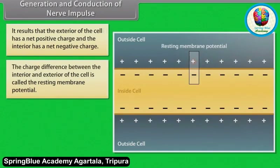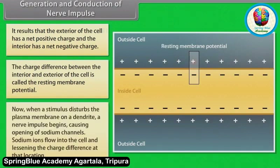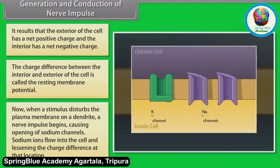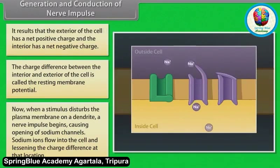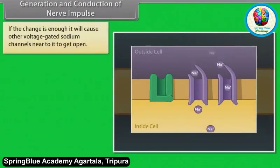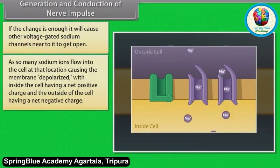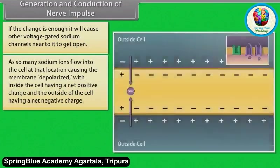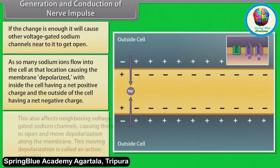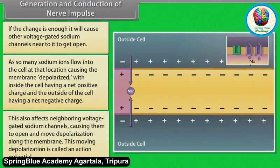The pumps send sodium ions out of the cell and bring potassium ions into the cell, while other channels allow some potassium ions to flow back out. Sodium ions cannot easily get back in to replace the lost positive charges. As a result, the exterior of the cell has a net positive charge and the interior has a net negative charge. This charge difference between the interior and exterior of the cell is called the resting membrane potential.